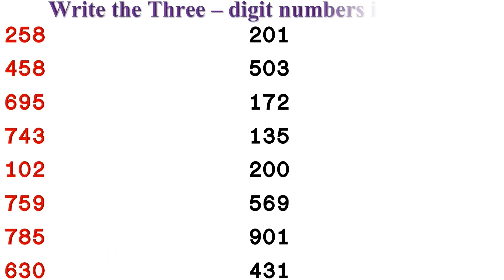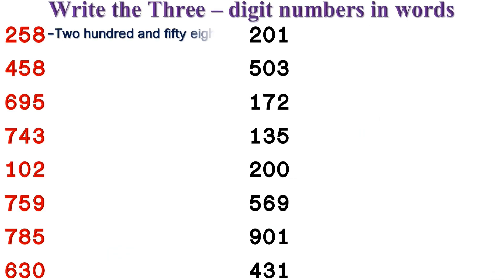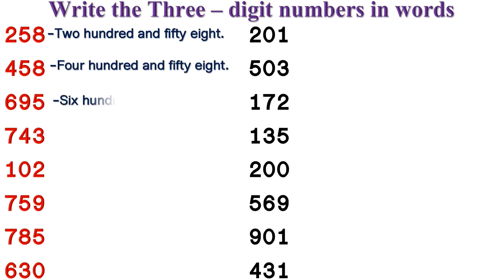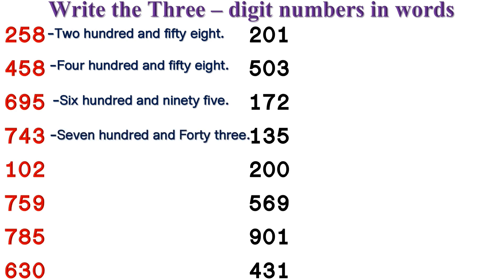Write the three-digit numbers in words: two hundred and fifty-eight, four hundred and fifty-eight, six hundred and ninety-five, seven hundred and forty-three, one hundred and two.